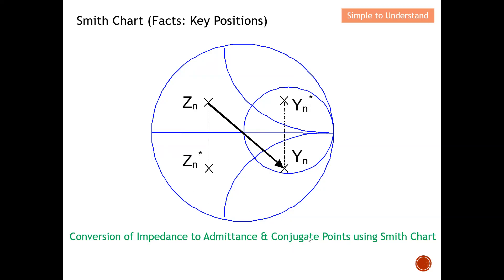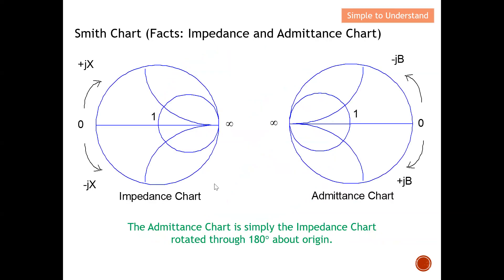Next, I'm going to explain conjugate points. To draw a conjugate, you draw one straight line cutting down through the resistance circle, making sure it's a straight line all the way — that gives you the conjugate point. So you just draw one straight line cutting through the resistance line, and that is your conjugate point. The same applies on both sides — if you are at the bottom, cut through the resistance line at the same distance, and that will be your conjugate point.